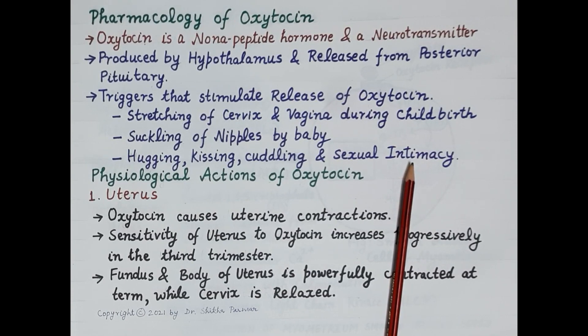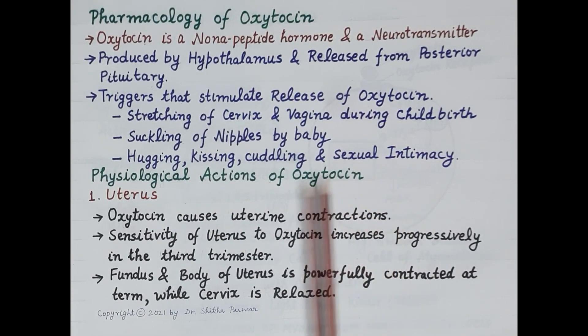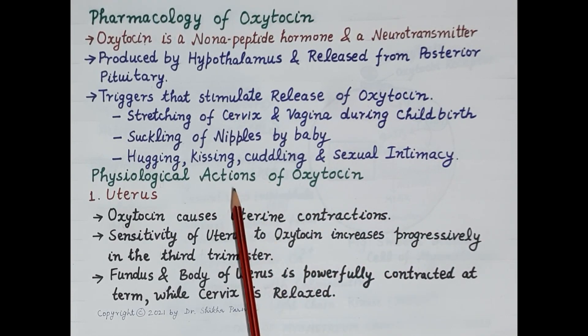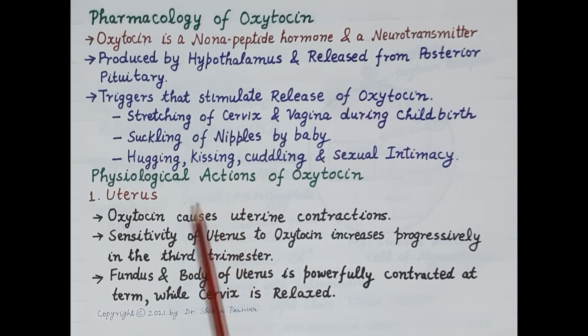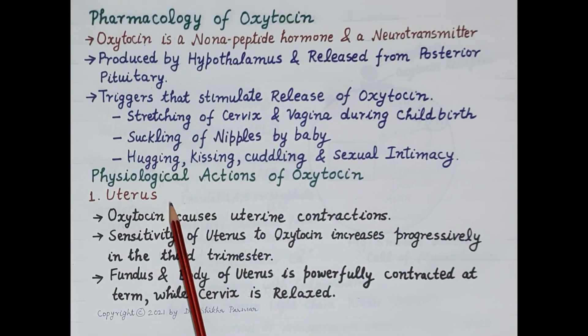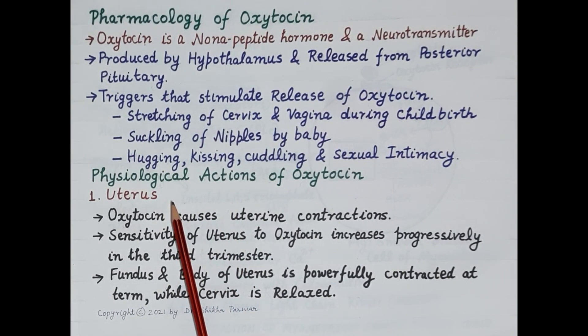Other triggers include hugging, kissing, cuddling, and sexual intimacy, which also stimulate the release of oxytocin. Now let's understand the physiological actions of oxytocin, starting with its effect on the uterus.